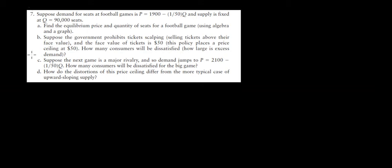Let's start working on question 7 in this video. Suppose we have demand for seats at a football game given by this function and supply is fixed at 90,000 seats. In question A we want to find the equilibrium price and quantity using algebra and a graph. So let's do first algebra and we'll plot it on a graph right away.